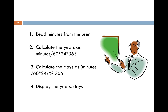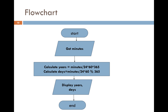For this problem, the set of instructions would be: first, read minutes from the user. Then calculate years as minutes divided by (60 × 24 × 365). Then calculate days as minutes divided by (60 × 24), remainder 365. Finally, display the years and days.